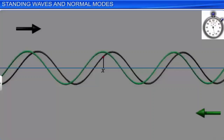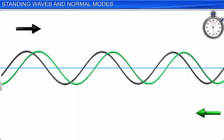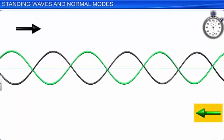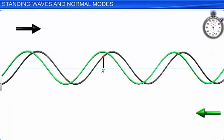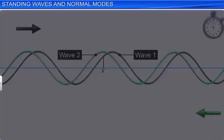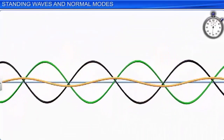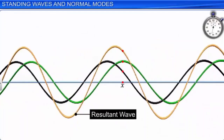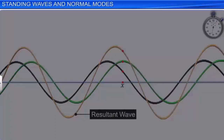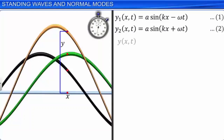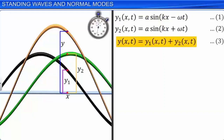By superposition of waves 1 and 2, we get a combined wave represented by y(x,t) = y1(x,t) + y2(x,t). Let this be equation 3. On substituting equations 1 and 2 into equation 3, we get y(x,t) = a sin(kx − ωt) + a sin(kx + ωt), which simplifies to y(x,t) = 2a sin(kx) cos(ωt). Let this be equation 4.